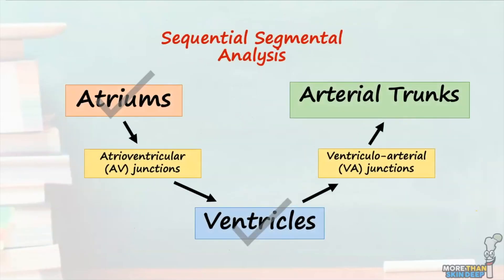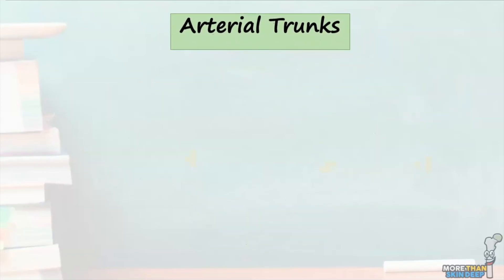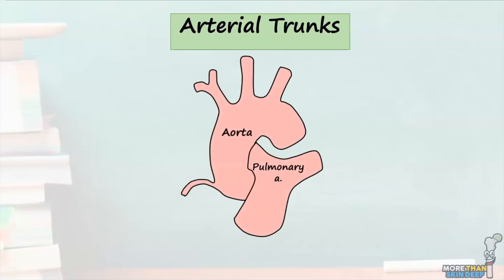Let's cover the morphology of the arterial trunks. The arterial trunks are the third and final cardiac segment, which include the aorta and pulmonary artery. Unlike the atria and ventricles, there are no intrinsic morphological features that can distinguish between the aorta and pulmonary trunk. Instead, we use the arterial branching pattern, such as the presence of coronary arteries in the aorta or branches of the pulmonary artery, to distinguish between the two.